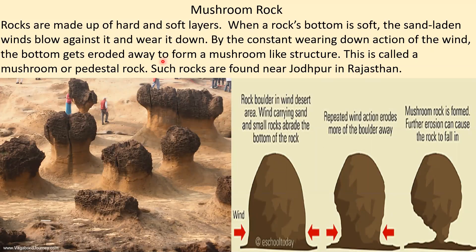The other name of mushroom rock is pedestal rock. Looking at the picture, the rock is made up of soft and hard layers arranged alternately and horizontally. In a wind desert area, wind carrying sand and small rocks erodes the bottom of the rock, and repeated wind action erodes more of the boulder. Mushroom rock is formed this way. Further erosion can cause the rock to fall.